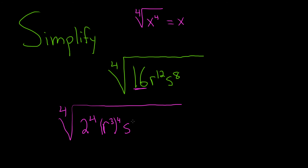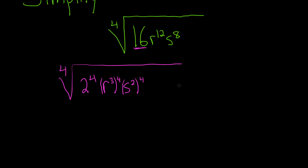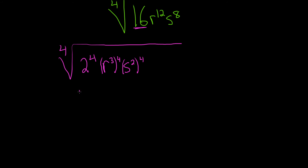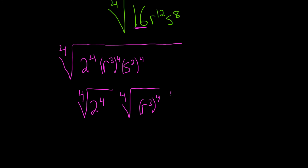For s, we know that 4 times 2 is 8, but we want to put the 2 here and the 4 on the outside, because we want it to go away when we take the fourth root. And you can check: 4 times 2 is 8. So now we just take the fourth root of each piece — the fourth root of 2 to the fourth, the fourth root of r cubed to the fourth, and the fourth root of s squared to the fourth.